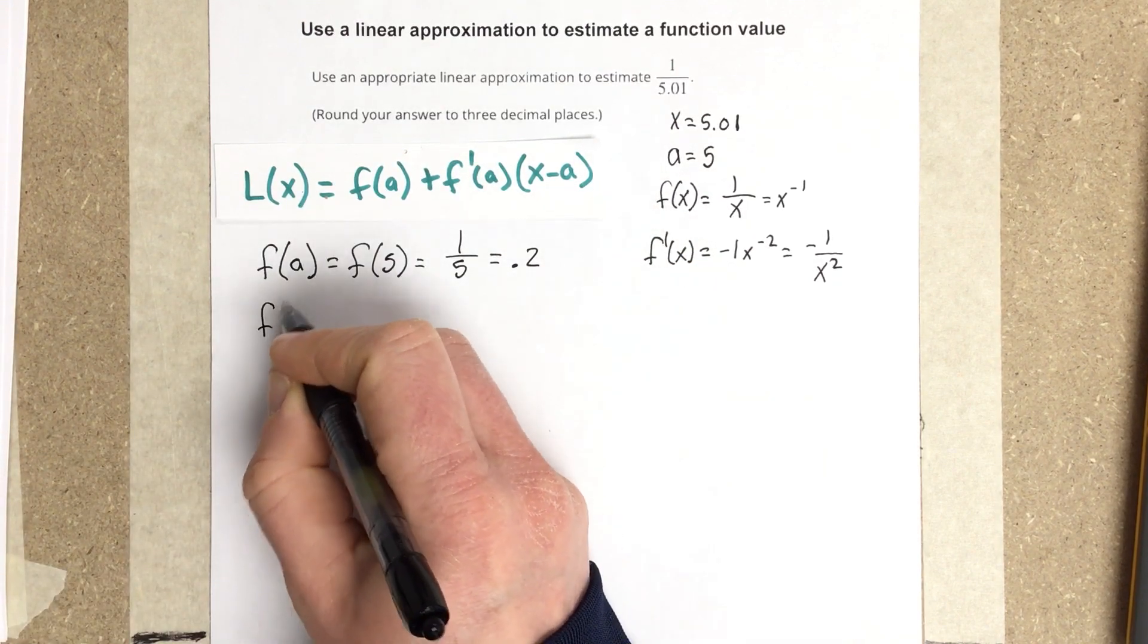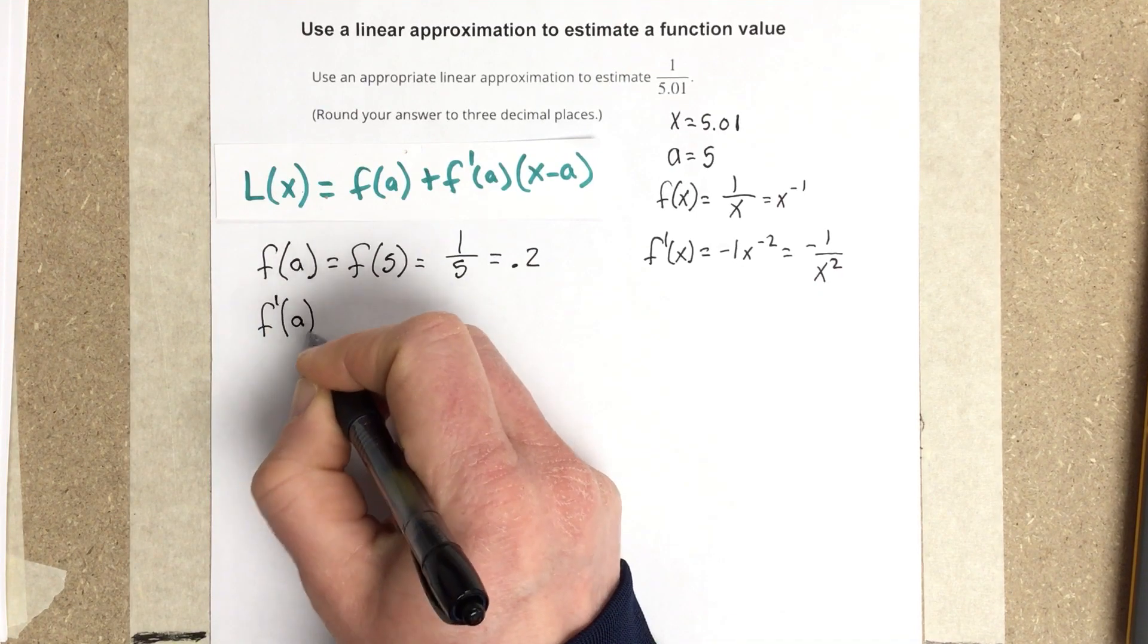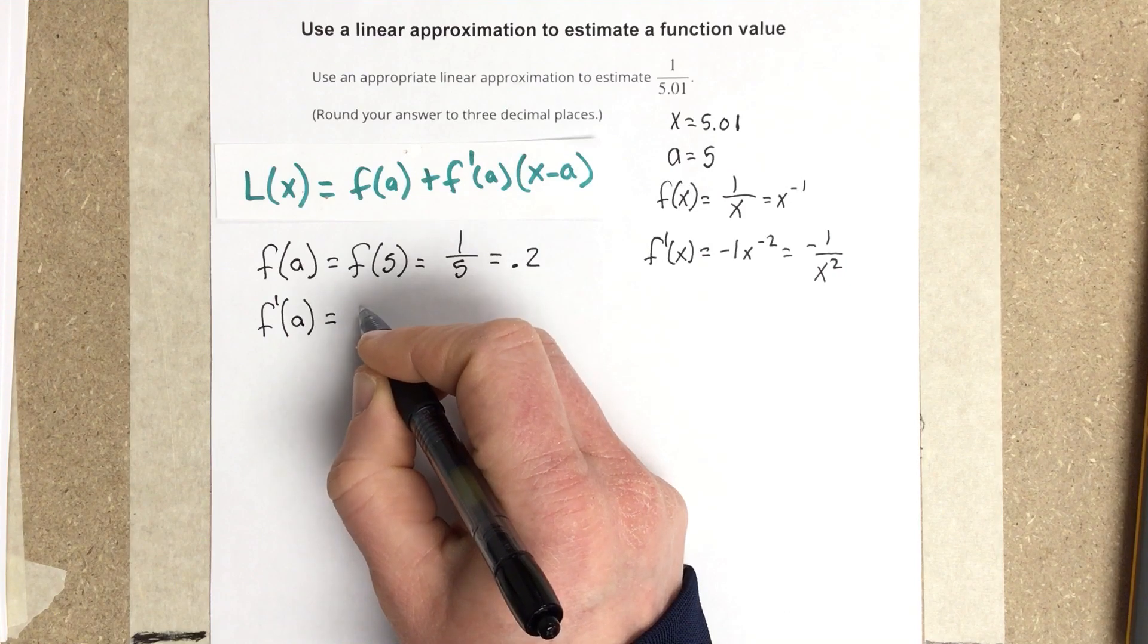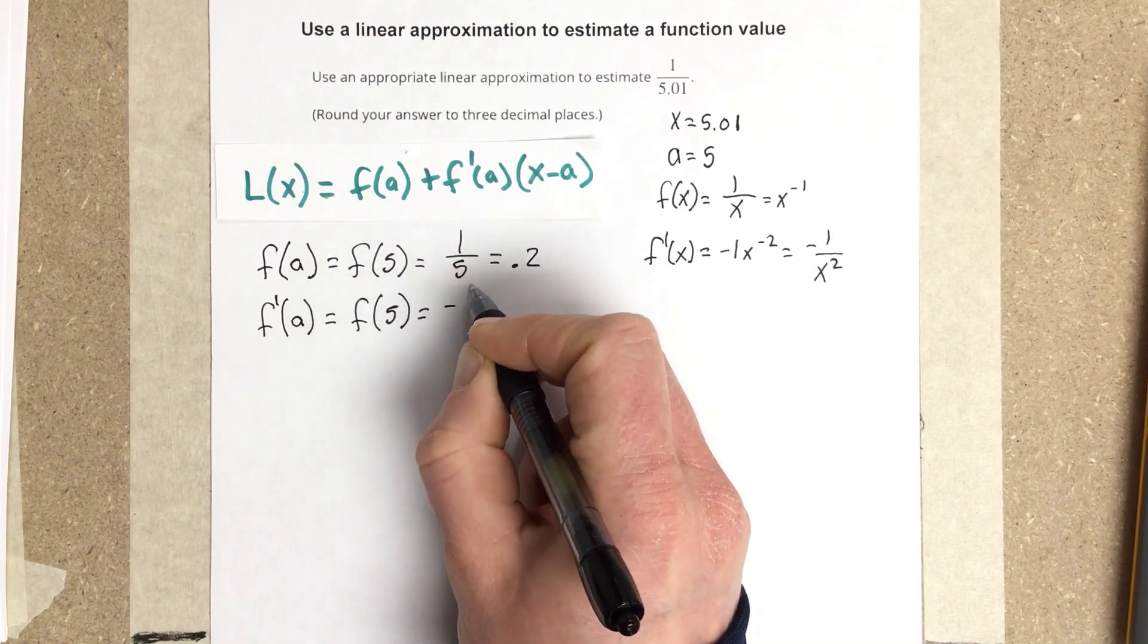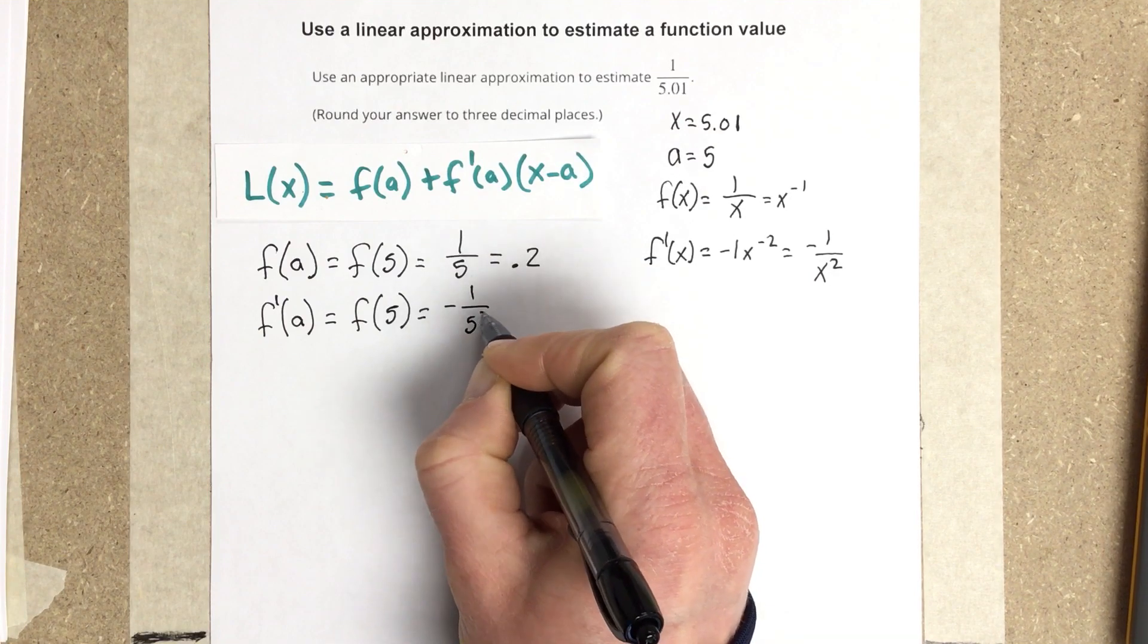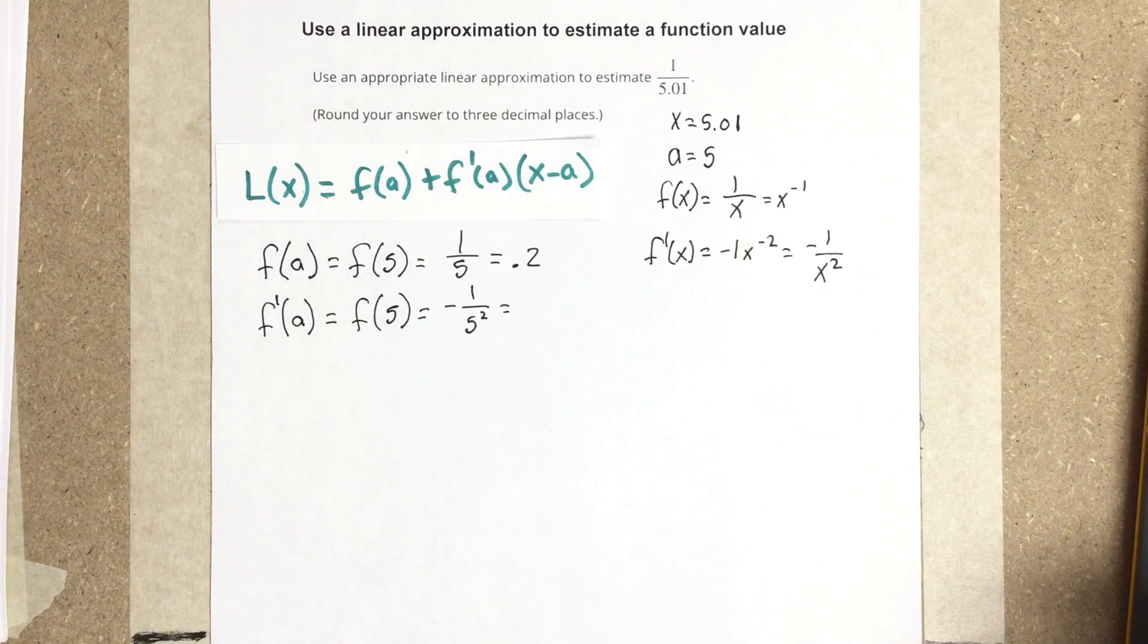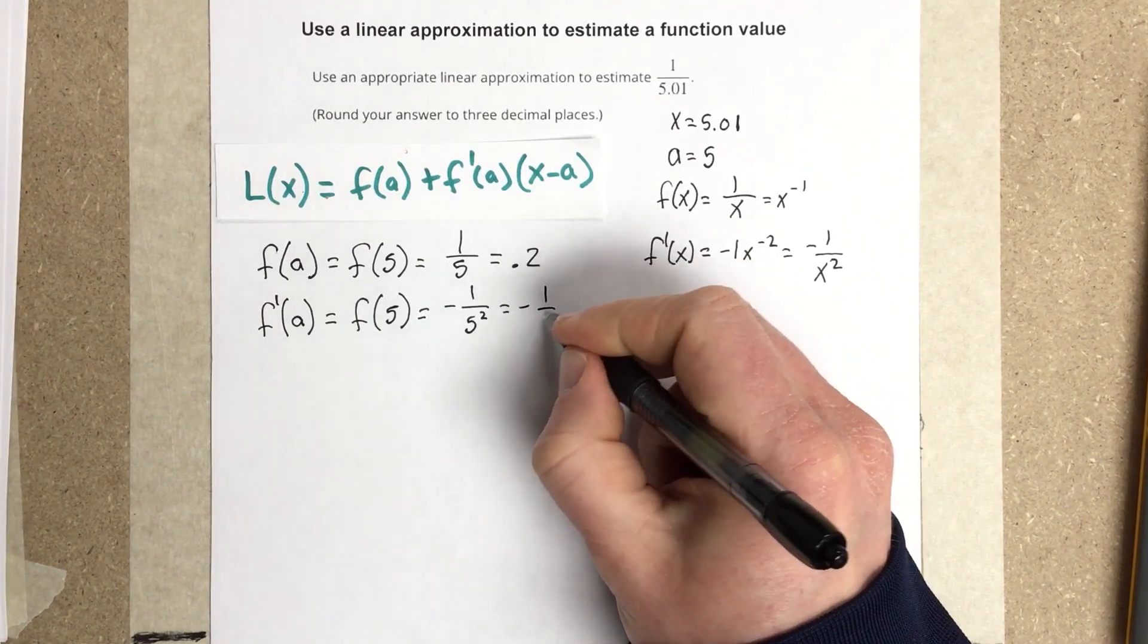And then I'm going to find what f prime of a is, which is going to be f prime of 5, which would be negative 1 over 5 squared. And that's going to be, I'll write that as negative 1 over 25.